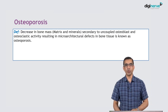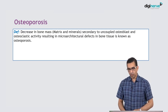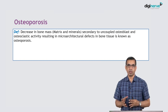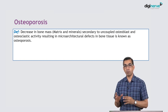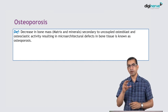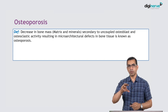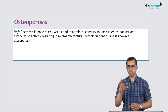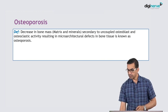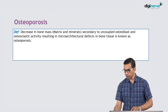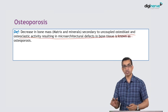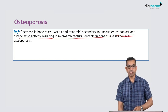This is osteoporosis, which is defined as a decrease in bone mass — meaning both matrix and mineral. Whereas rickets and osteomalacia are problems of only minerals — mass is not less; in fact, mass is sometimes more. Osteoporosis is secondary to uncoupled osteoblast and osteoclastic activity resulting in micro-architectural defects in bone tissue.